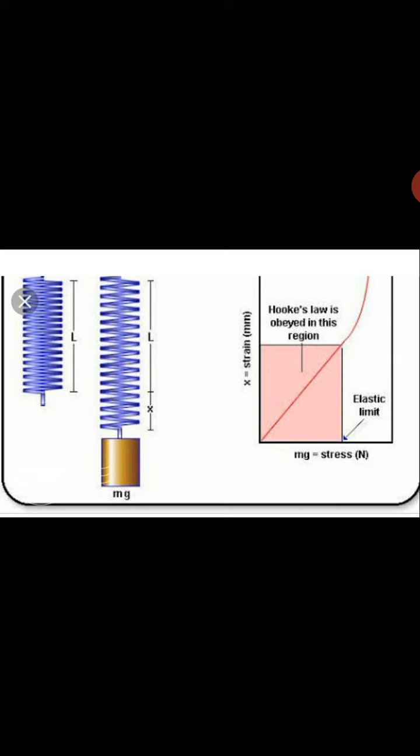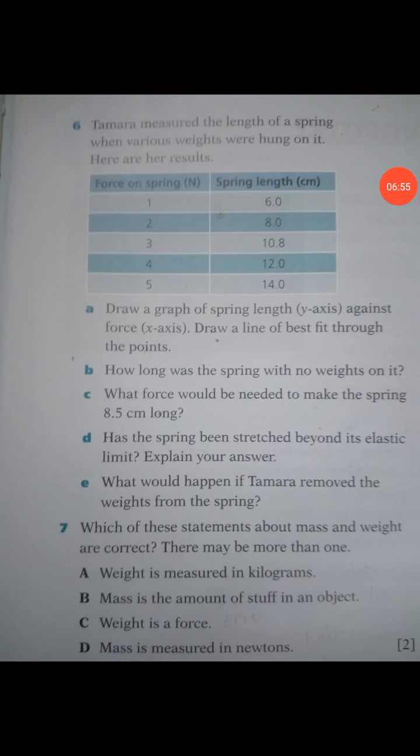Tamara did the same experiment using a spring with various weights. She hung various weights on the spring and made a table of observations. With a force of 1 Newton the spring length became 6 cm, with 2 Newtons it became 8 cm, with 3 Newtons it became 10.8 cm, with 4 Newtons it became 12 cm, and with 5 Newtons the length became 14 centimeters.